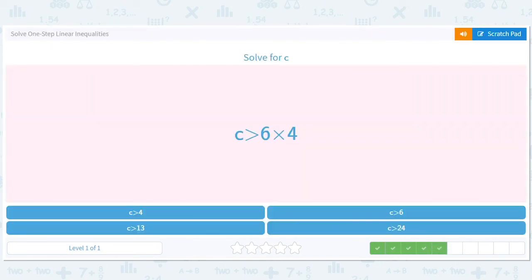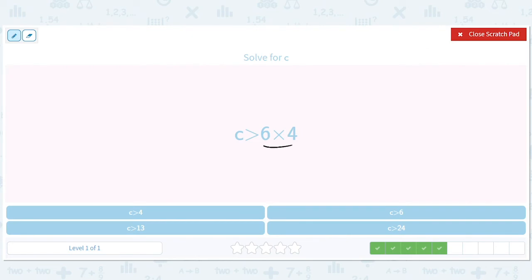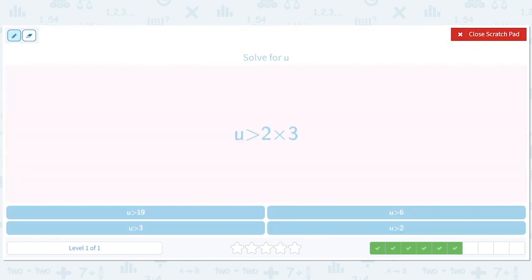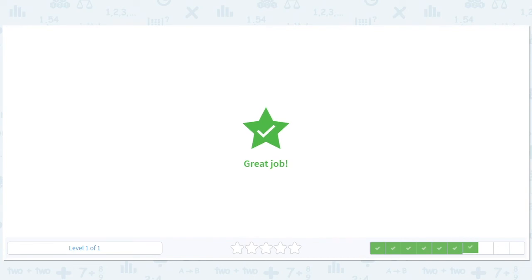C is greater than. What's different about this one? A little multiplication on the other side. C is greater than 2 times 3, which is 6. So U is greater than 2 times 3, which is 6.